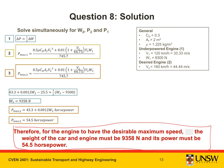Therefore, for the engine to have the desirable maximum speed, the weight of the car and engine must be 9358 Newtons and its power must be 54.5 horsepower. Thank you for watching this video and for participating in the course and good luck.